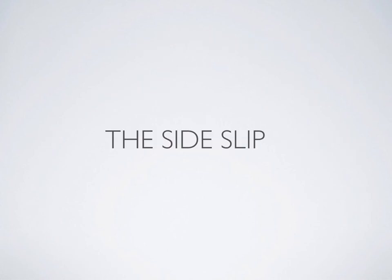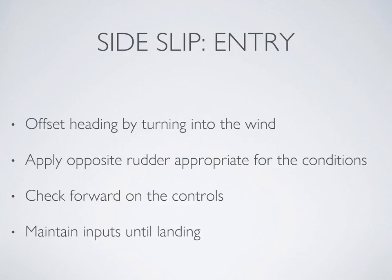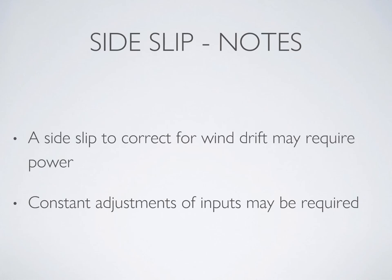Now let's look at the side slip. To execute a side slip, offset the heading first by turning the aircraft into the wind, and then apply opposite rudder to compensate. Check forward on the controls to make sure that the nose does not rise, and maintain these inputs as long as needed or even up until landing. Remember that a slip causes additional drag, so in a side slip, if you want to maintain your descent path you might need to maintain or add more power.